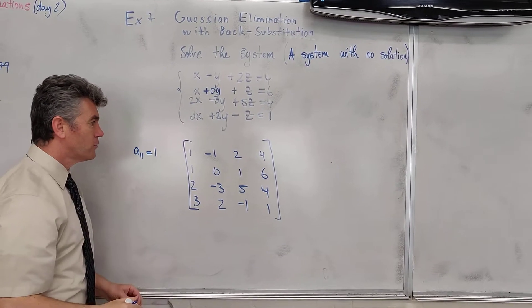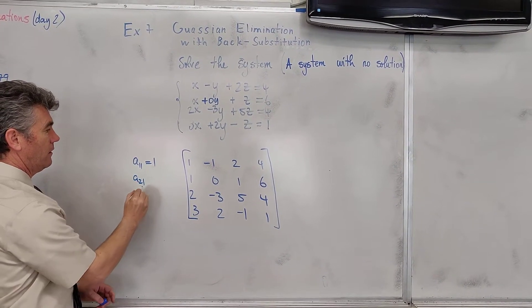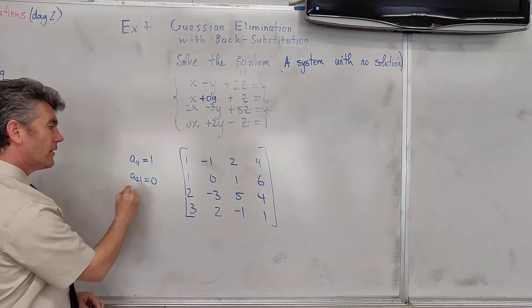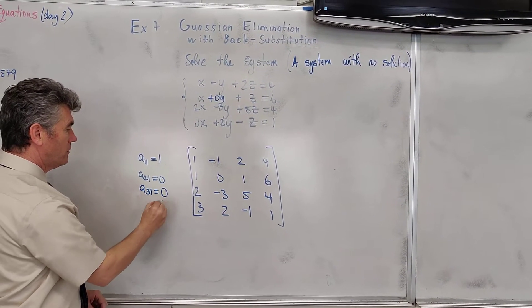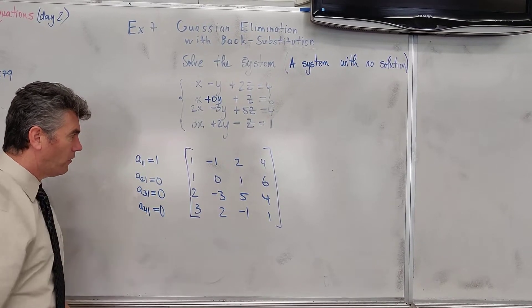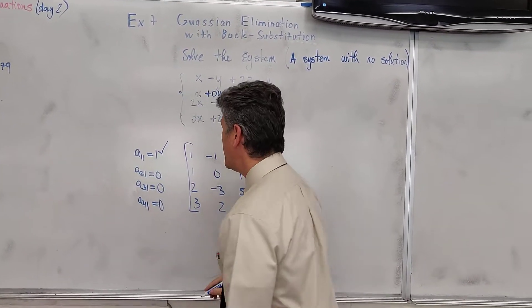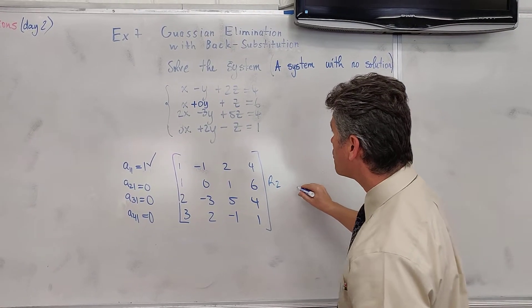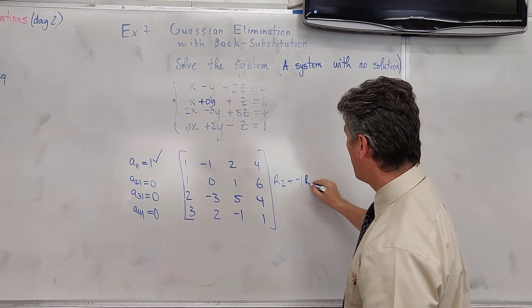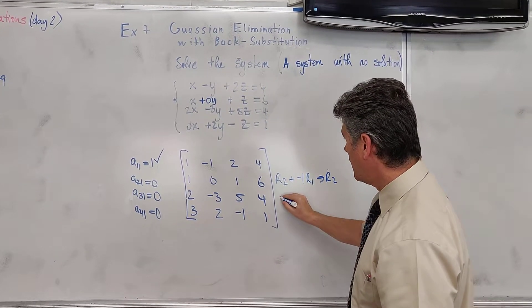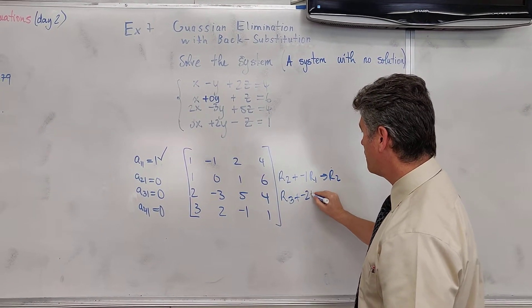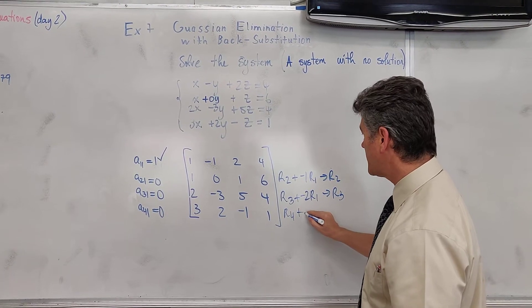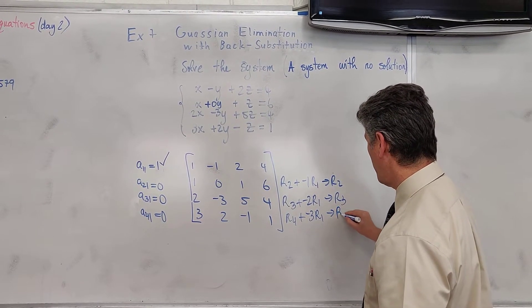Now what we want is the first entry in the second row, the first entry in the third row, and the first entry in the fourth row to be equal to 0. Let's quickly write down what our rows are right now. We have a checkmark. And we know that we can use only multiples of row 1. We have row 2 plus negative 1 row 1 will be the new row 2. Row 3 plus negative 2 row 1 will be the new row 3. And finally, row 4 plus negative 3 row 1 will be the new row 4.